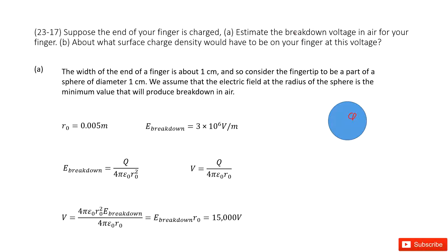We look at the keyword, breakdown in air. If you check your textbook, you will find breakdown electric field in air equals to this number. It looks like we know this electric field at the surface of this spherical object, and we need to find its voltage at the surface.